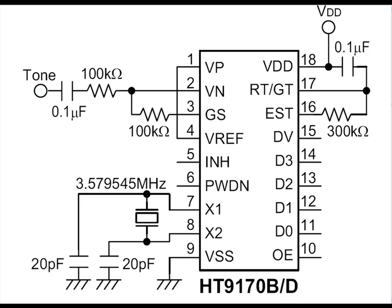Let's now try to understand the DTMF decoder IC 9170B. This is an 8-pin IC which has got an input arrangement at pin number 2 with this kind of C and R arrangement. It has got to be connected to a crystal of 3.579545 MHz in this arrangement. And then we also have an R and C arrangement here for a certain frequency internal oscillator. And this is the output D0, D1, D2, and D3.